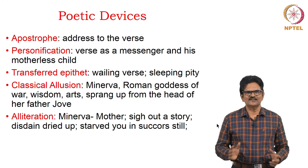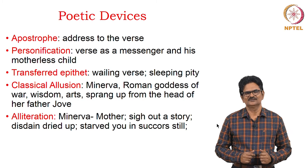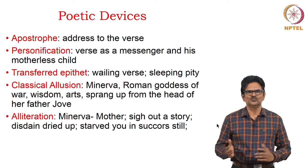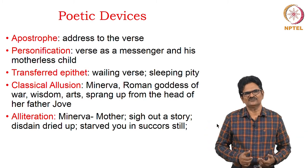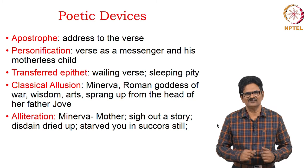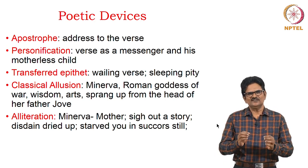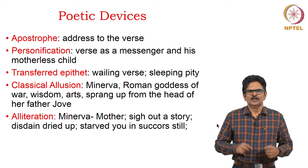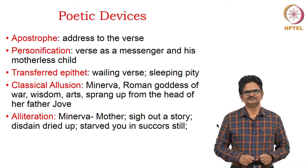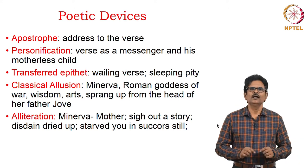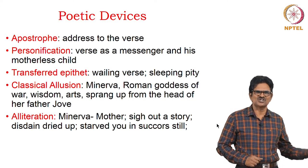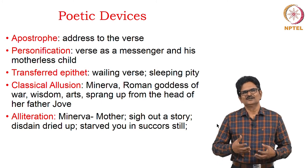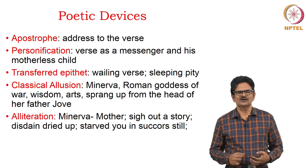Next, there is a classical allusion: the Minerva-like verse is not born of a woman. Minerva is the Roman goddess of war, wisdom, and arts. She came out of the head of her father, Jupiter, directly, and so she doesn't have a mother. Likewise, the verses have come out of the head and imagination of the poet. We also notice alliterations: Minerva and mother, 'sigh out a story,' 'disdain dried up,' 'starved you in suckers still.' These alliterations support the poet's creative endeavor to attract the attention of his lady love.